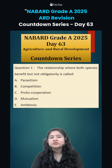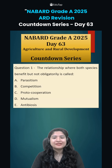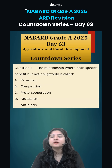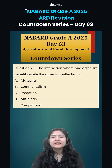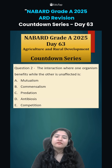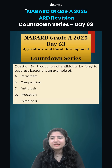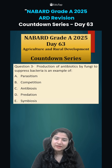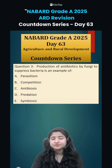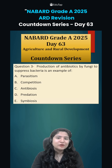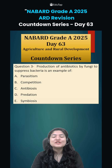Now coming to today's questions. Question number one: the relationship where both species benefit but it is not obligatory is known as what? Second: the interaction where one organism benefits while the other is unaffected is? And finally: the production of antibiotics by fungi to suppress bacteria is an example of which type of relationship? Comment down your answers and we will discuss in the next class. All the very best for the exam. Thank you.